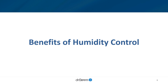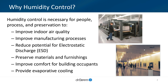In this section, we will discuss the importance of controlling relative humidity. The benefits of humidity control fall into three main areas: people, processes, and preservation. Proper indoor RH helps to improve the health and thermal comfort of building occupants, it improves manufacturing processes, and it preserves materials and furnishings.